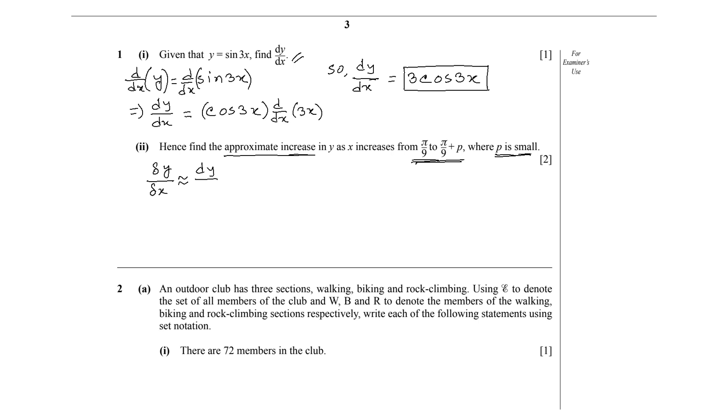So let's multiply this with δx. In the next line, we can write δy is equivalent to dy/dx times δx. Now we need to find the value of dy/dx and δx to get the small increase or approximate increase in y.